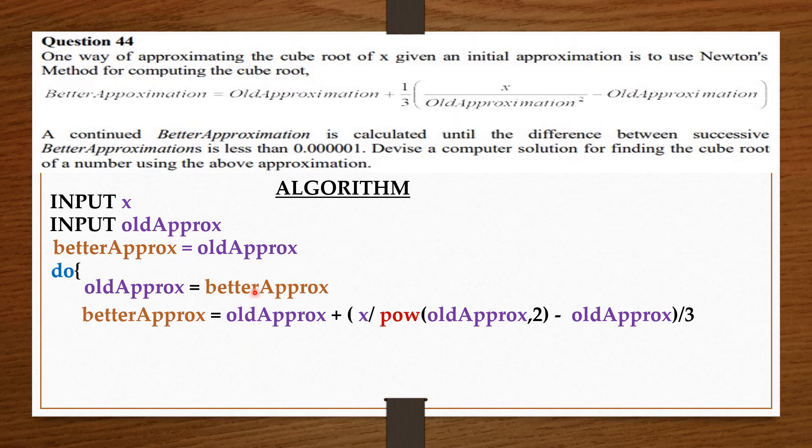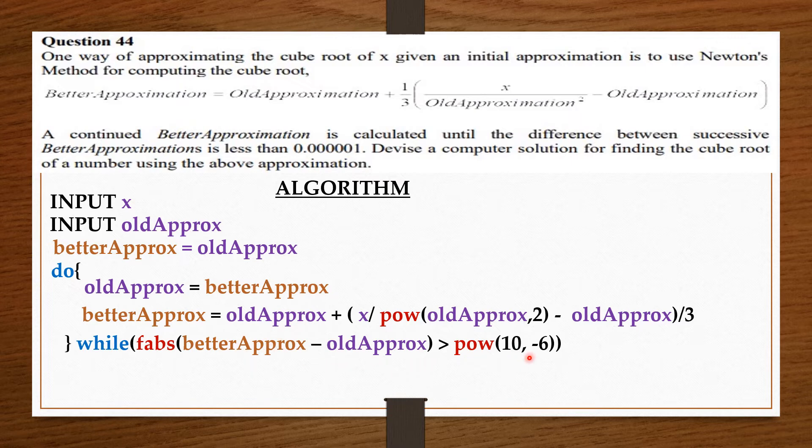If the difference between the betterApprox and the oldApprox is approaching 1 in 10 million, the moment it approaches 1 in 10 million this whole thing should stop.